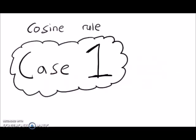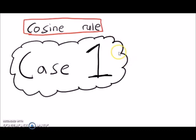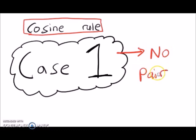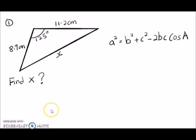Before going to the examples, let's ask: when does the cosine rule apply? We can only apply the cosine rule when there is no pair given — meaning no angle paired with its opposite side. Let's look at question one: looking at this triangle, there is no pair.